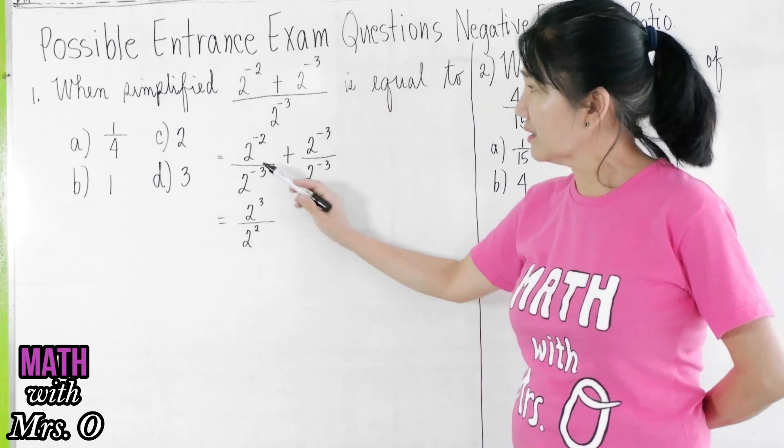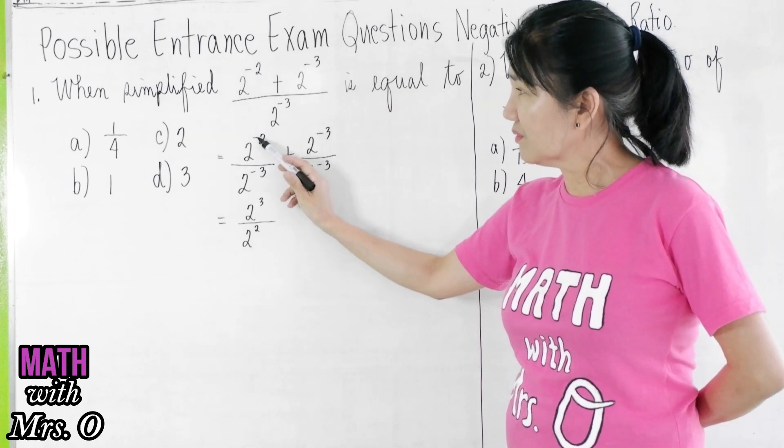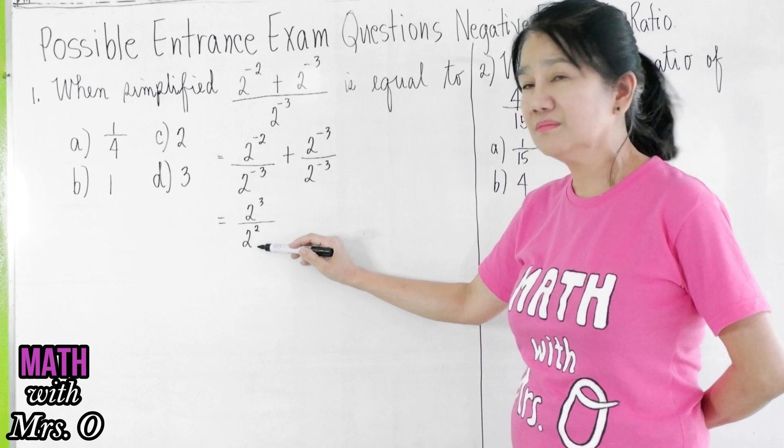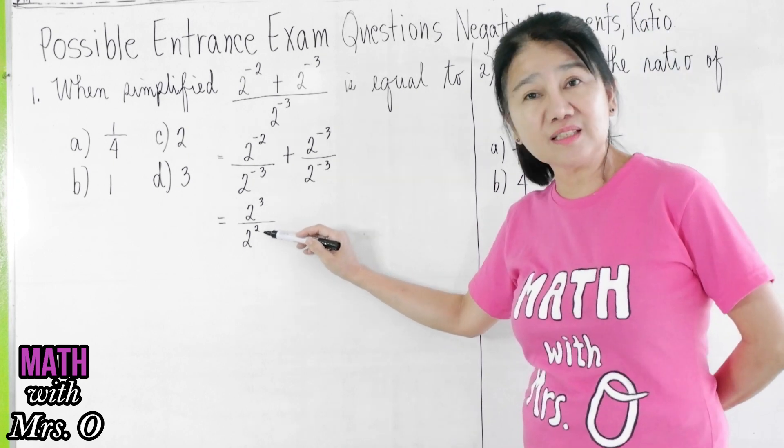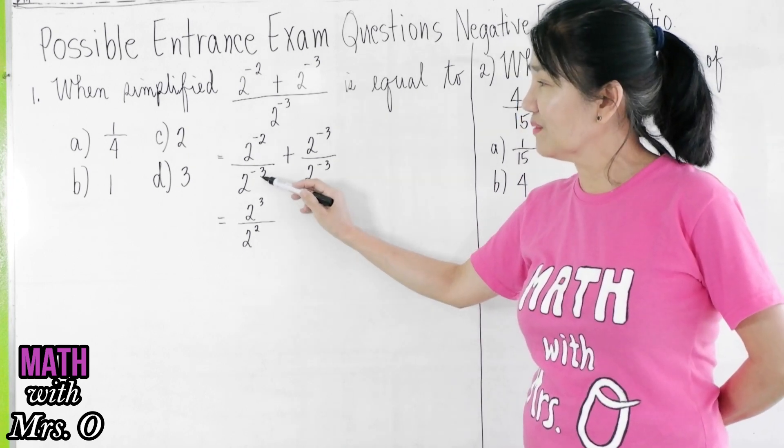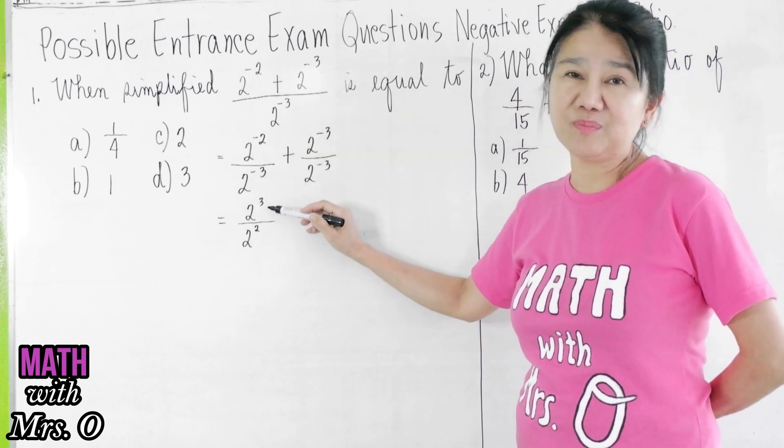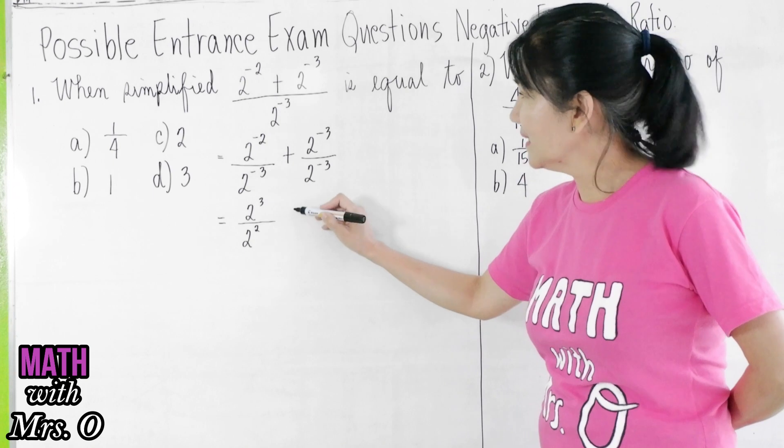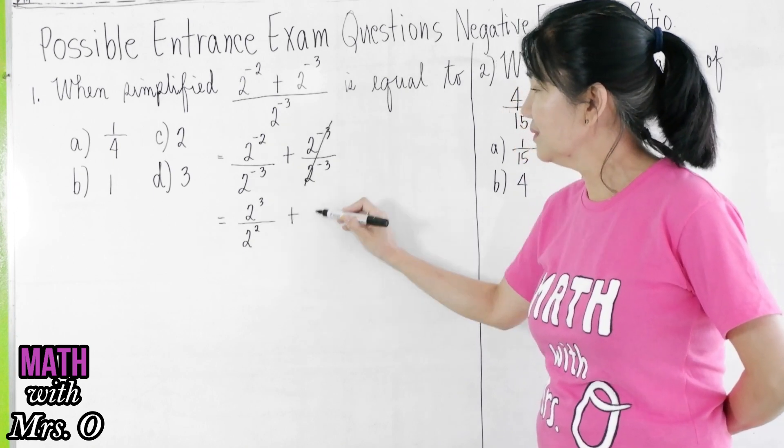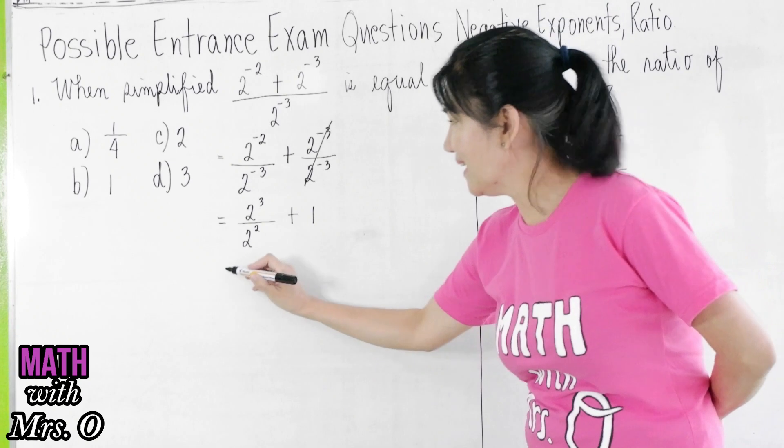And you learn that there's a shortcut. If this has a negative exponent, you can write it down. The exponent becomes positive. And if this has a negative exponent, you can transfer it up, but the exponent becomes positive. And this is now equal to 1.